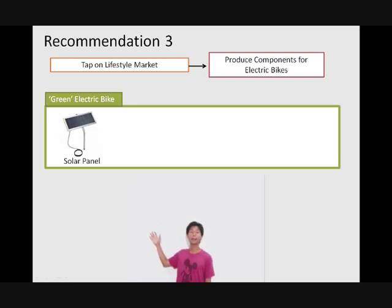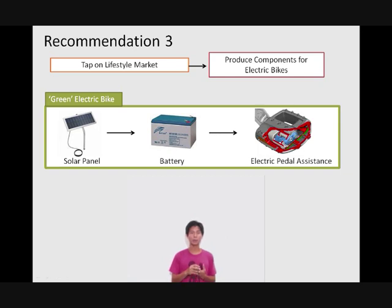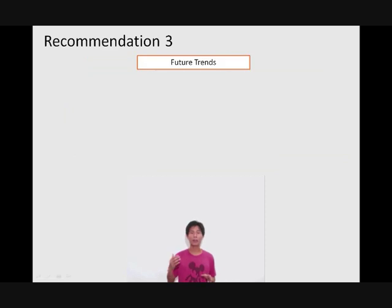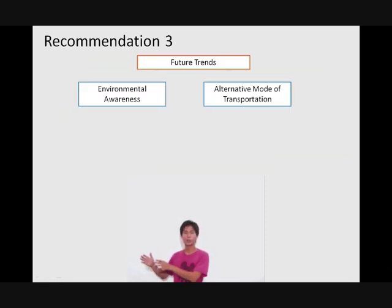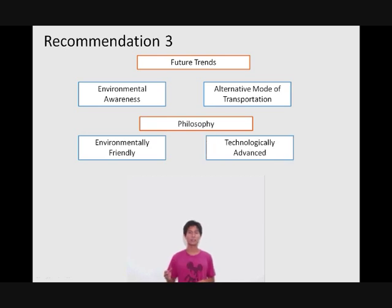Now, here's how it goes. Solar panels on the bicycles will generate electricity and this will be stored in a battery. Now, when needed, users can activate this energy in order to activate the electric pedal assistance. Now, this recommendation meets the rising trends of environmental awareness and increasing needs for alternative transportation modes given the rising fuel prices. Furthermore, it also meets Shimano's philosophy of being an environmentally friendly as well as a technologically advanced company.